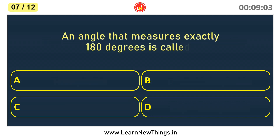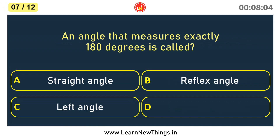An angle that measures exactly 180 degrees is called a Straight angle.